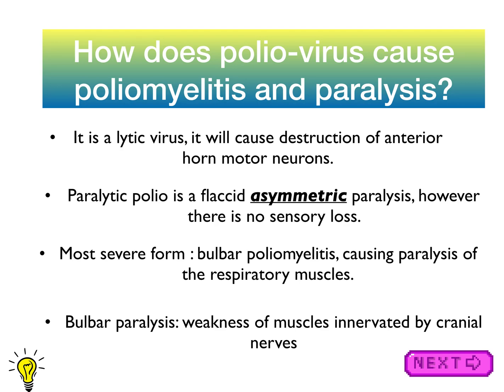Bulbar paralysis is weakness of muscles innervated by the cranial nerves. Importantly, poliovirus doesn't immediately cause paralysis — it can initially cause symptoms such as fever, fatigue, headache, and vomiting, a kind of mild illness. There are three disease manifestations: mild illness, aseptic meningitis, and in the most severe cases — about 1–3% of people — the full paralytic form.